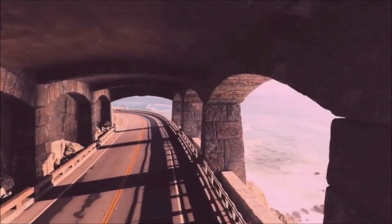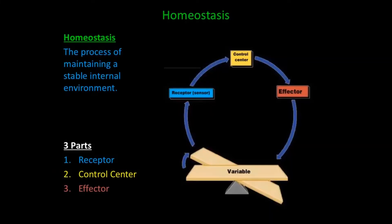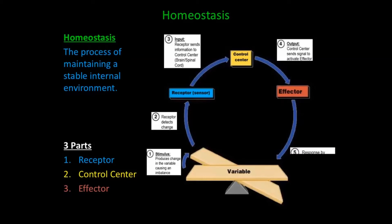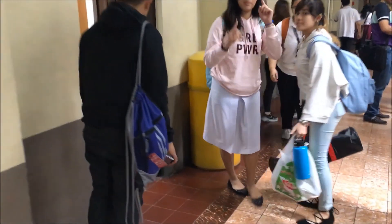This feedback mechanism restores the system to its set point with the use of its components: the receptor, integrator, and effector. The external environment is consistently changing in temperature. From a hot hallway to an air-conditioned room, the human body will regulate its internal temperature by releasing or taking in heat. The body senses the change in temperature, which stimulates the nerves and delivers information to the hypothalamus. The hypothalamus sends out a response to accommodate the decrease in temperature by spontaneously contracting the muscles, producing body heat which warms the body.